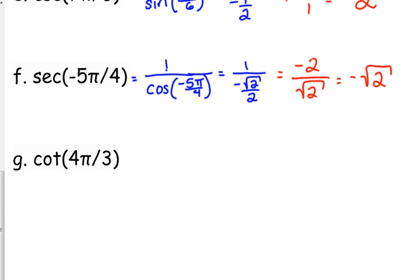Last example here, let's look at a cotangent. Cotangent is the reciprocal of tangent, so that means it is cosine over sine. So 4 pi over 3, that's another one in the third quadrant. 4 pi over 3 is another one in the third quadrant.